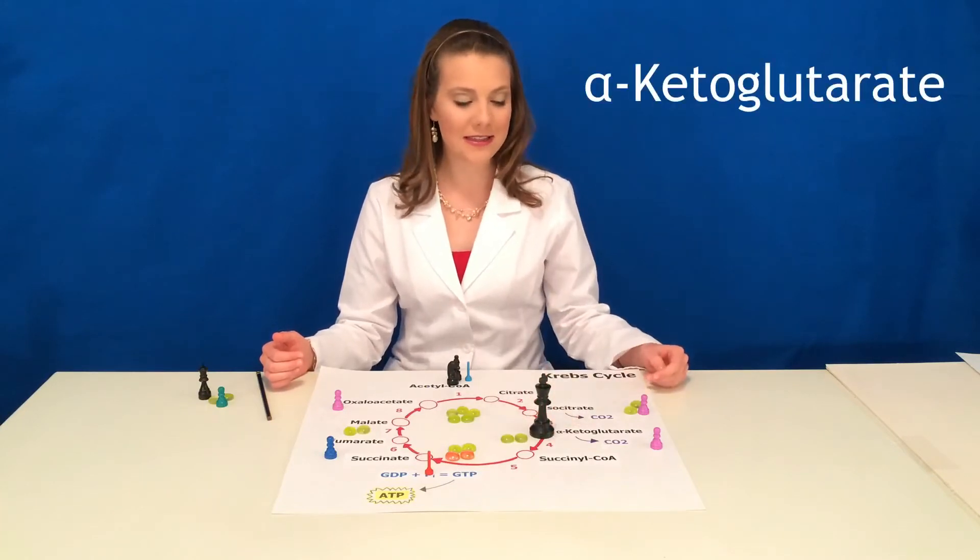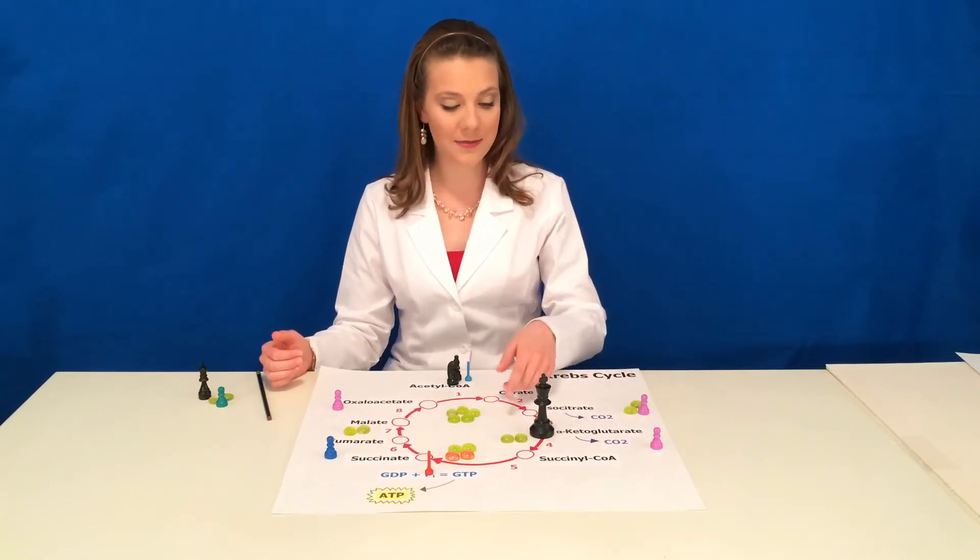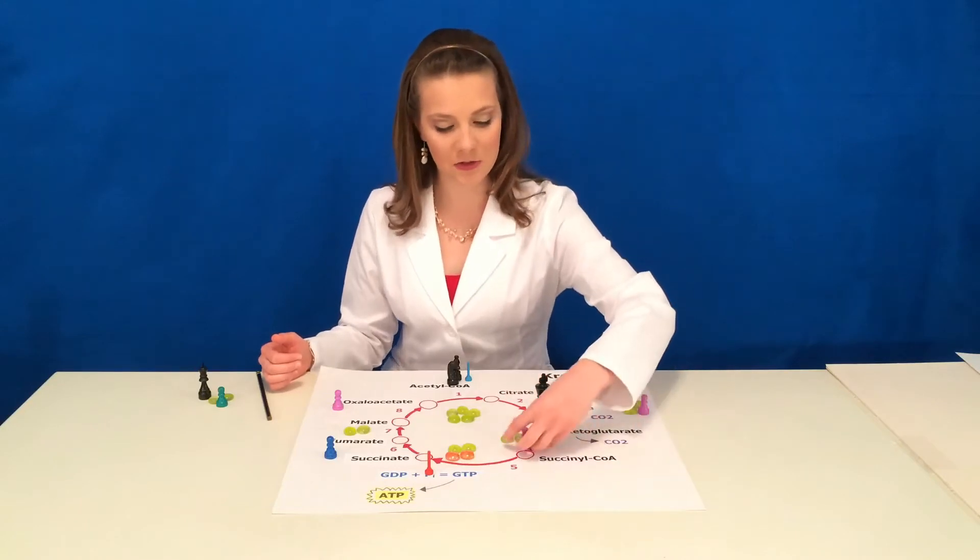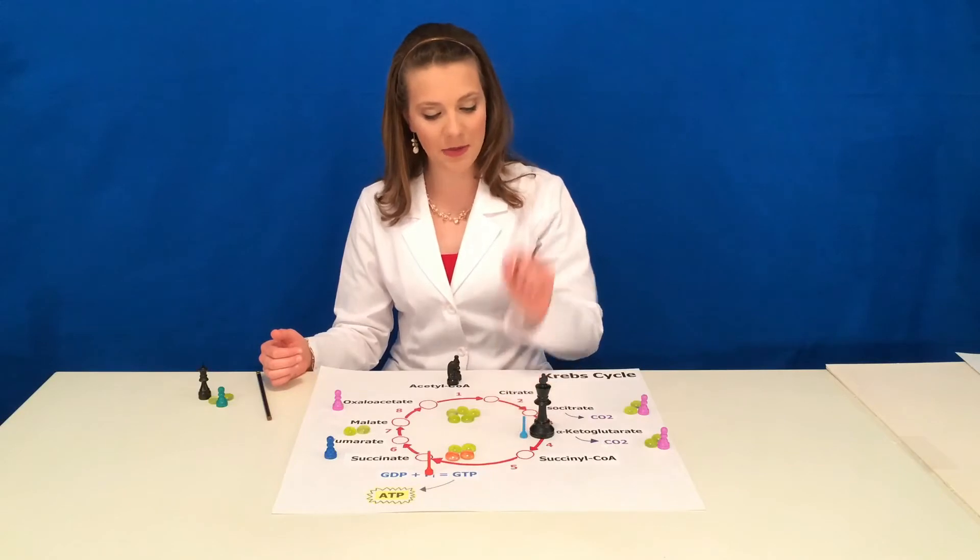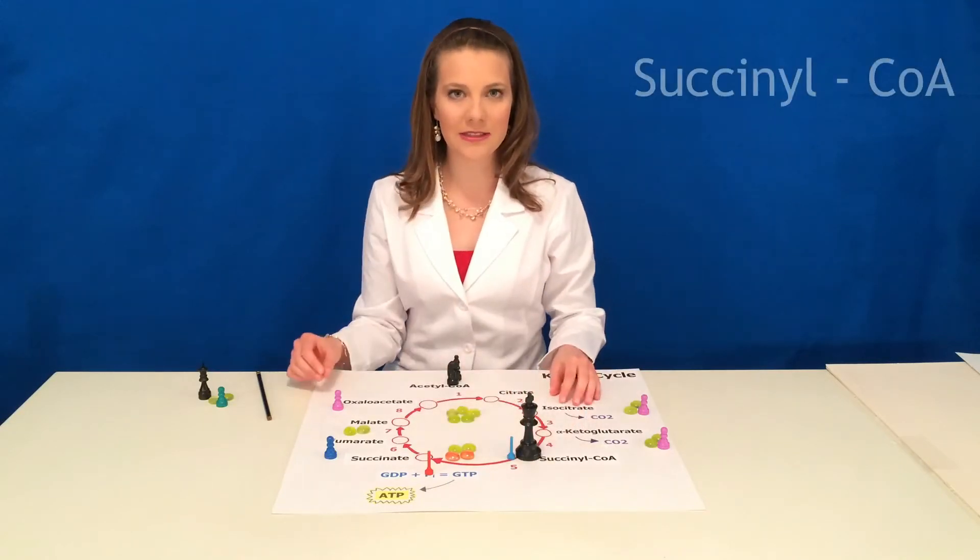In step four, another NAD comes in and oxidizes him, taking two more of his electrons. After losing a CO2 molecule, coenzyme A from earlier comes and bonds to him, forming succinyl coenzyme A.